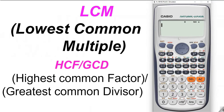Let me give one example. To press this key we have to press alpha first, and then let's find out the LCM. LCM appears on the screen and we have to give two numbers as input. Let's give 40, and for the comma we press shift and then the comma button, and let's give 20. Pressing equals, 40 is the lowest common multiple of 20 and 40.